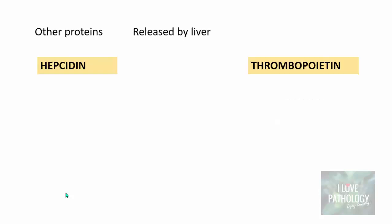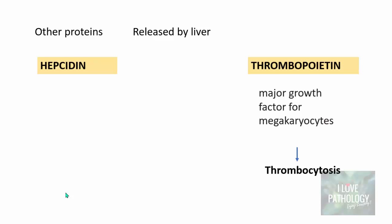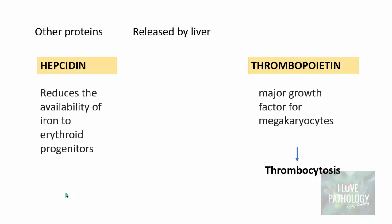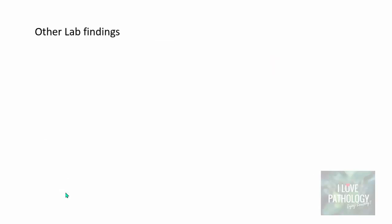Other proteins synthesized by the liver include hepcidin and thrombopoietin. Thrombopoietin is a major growth factor for megakaryocytes and stimulates platelet production, which is why thrombocytosis is seen. Hepcidin reduces the availability of iron to erythroid precursors; since iron is essential for hemoglobin synthesis, the red blood cells produced are deficient — leading to anemia. This is referred to as anemia of chronic inflammation, mainly due to hepcidin reducing iron availability to erythroid progenitors.